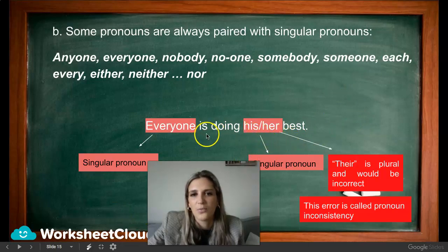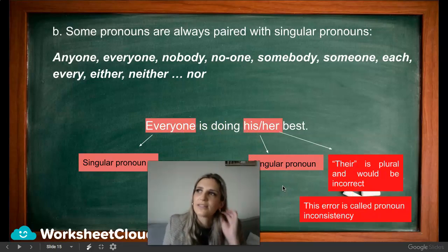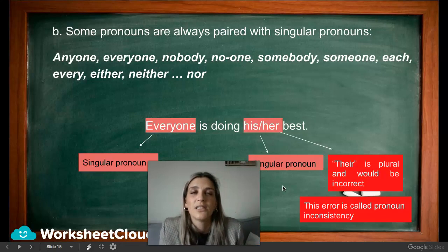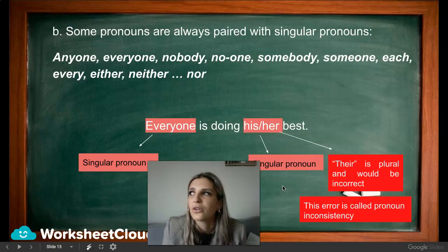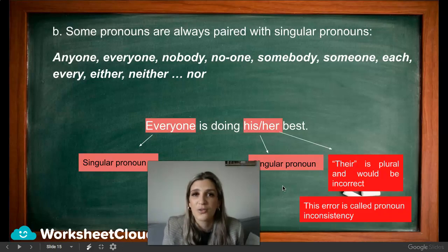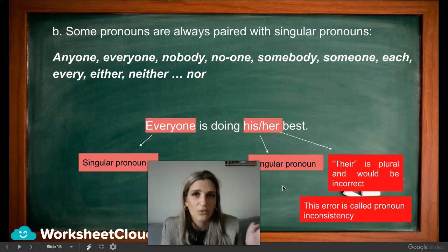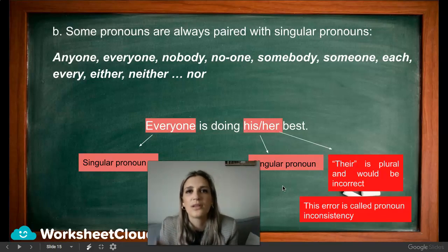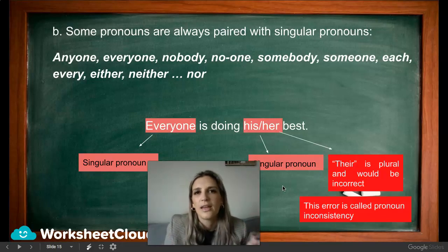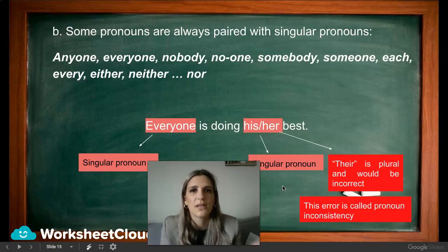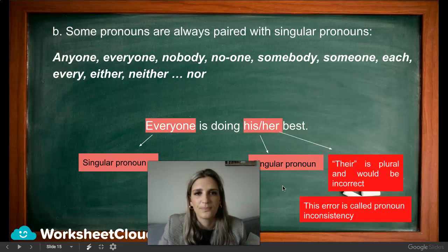Most of the time for pronoun inconsistency, if you start your sentence with 'one,' you must keep it consistent. For example: 'One has to be reminded of their homework, and you must do it' — those are incorrect pronouns, that's pronoun inconsistency. The correct version is: 'One should remember to do one's homework, and one must do it.' Or consistently: 'You must remember to do your homework.'